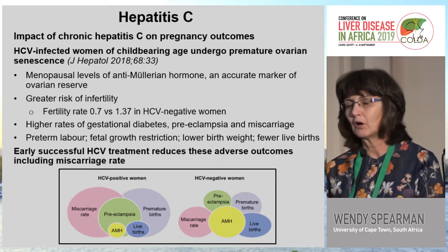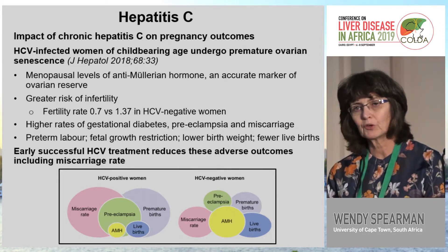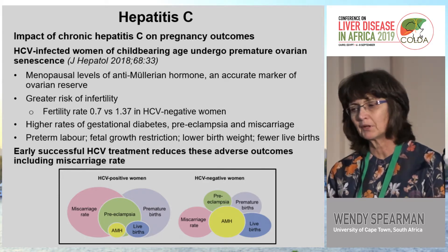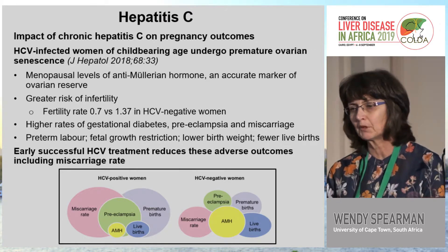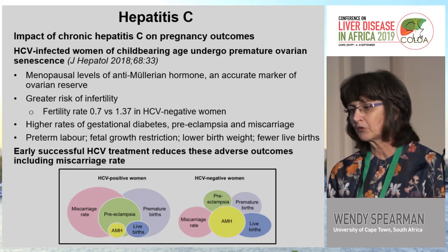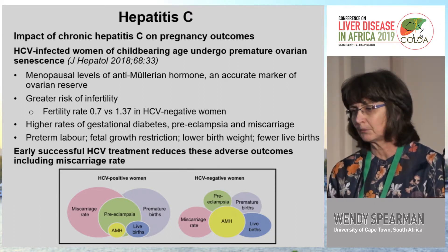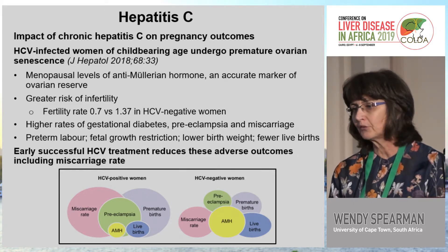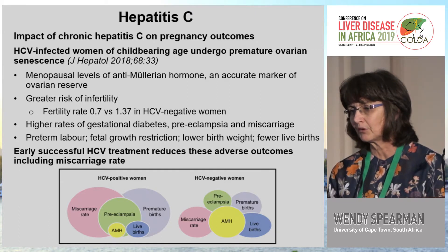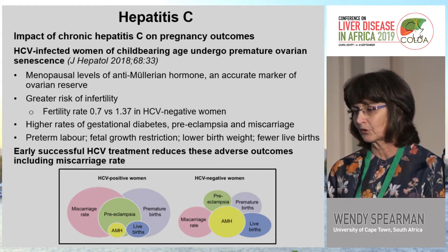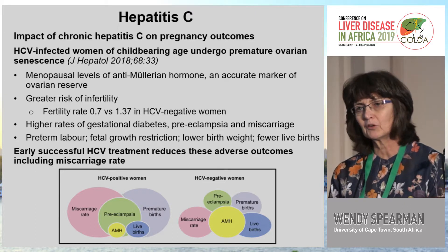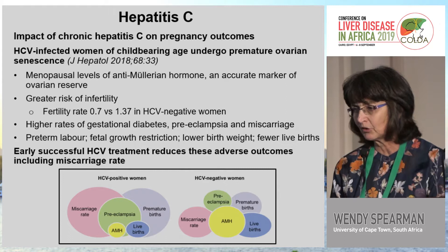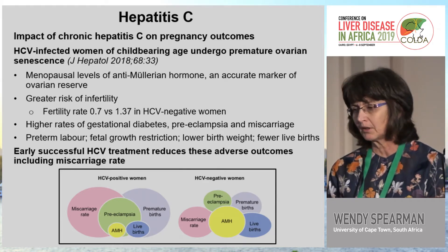Hepatitis C-infected pregnant women of childbearing age undergo premature ovarian senescence, with menopausal levels of anti-Müllerian hormone and greater risk of infertility — fertility rate of 0.7% compared to 1.3% in hepatitis C-negative women. They have higher rates of gestational diabetes, preeclampsia, and miscarriage. Infant outcomes include preterm labor, fetal growth restriction, lower birth weight, and fewer live births. Importantly, if these women are diagnosed early and treated before entering childbearing age, adverse outcomes including the risk of miscarriage decrease.